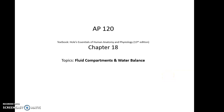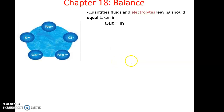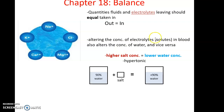Chapter 18 topics: fluid compartments and water balance. Balance is important for the human body - maintaining appropriate homeostasis, that stable internal environment. A big part of that is the amounts of fluids and electrolytes. What we should have is the amount of fluids and electrolytes that leave equal the amount of fluids and electrolytes that are coming in - out equals in.